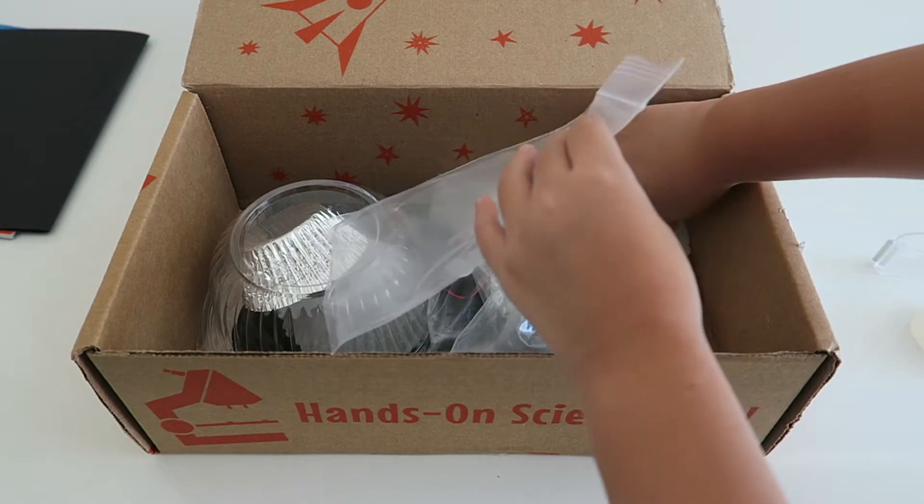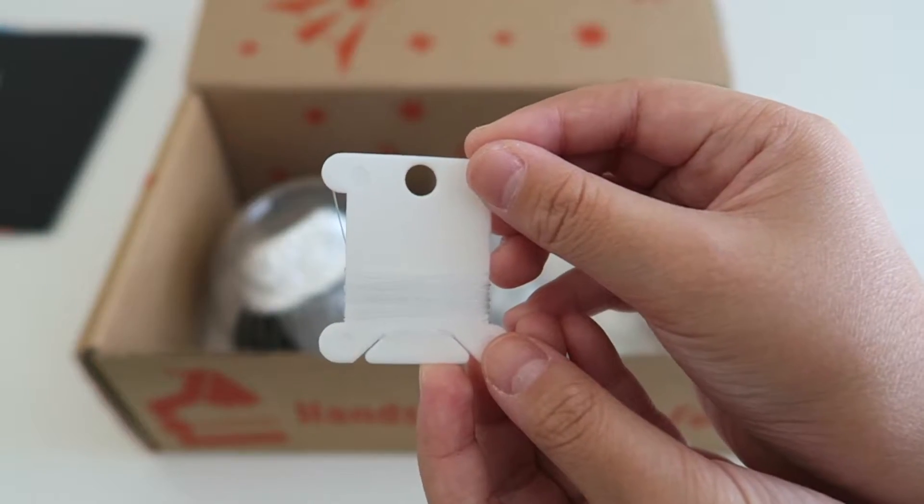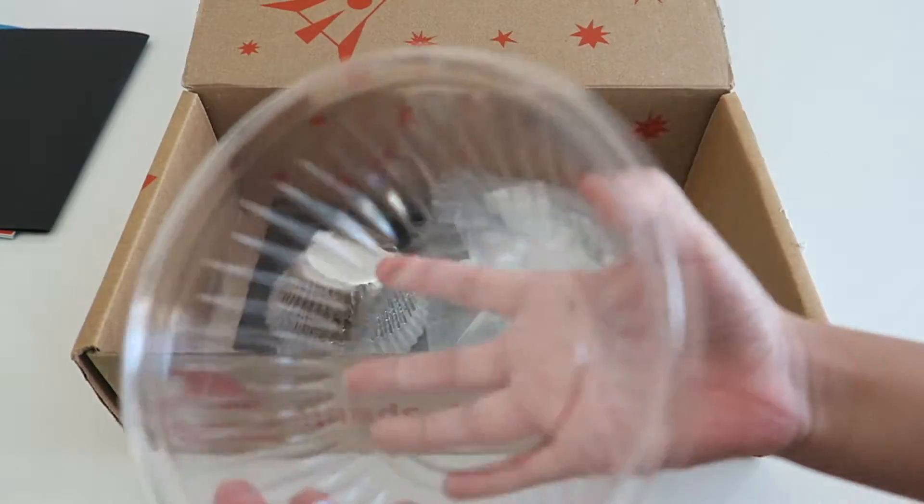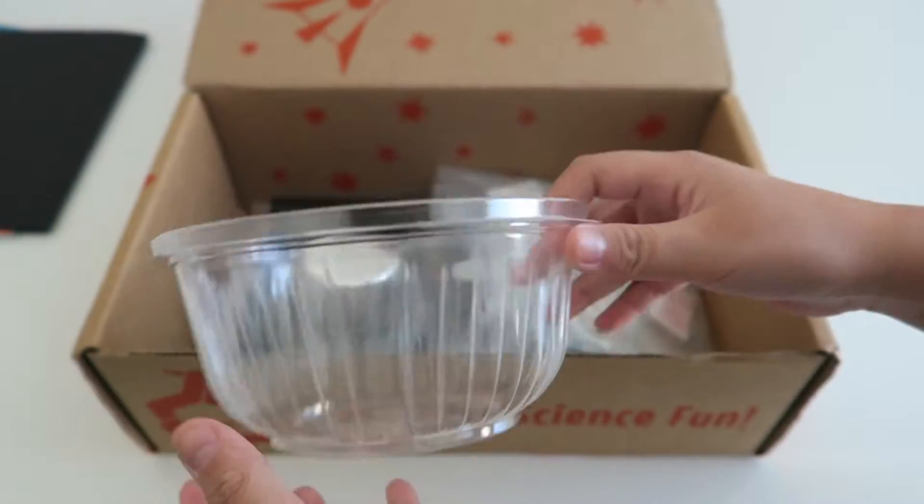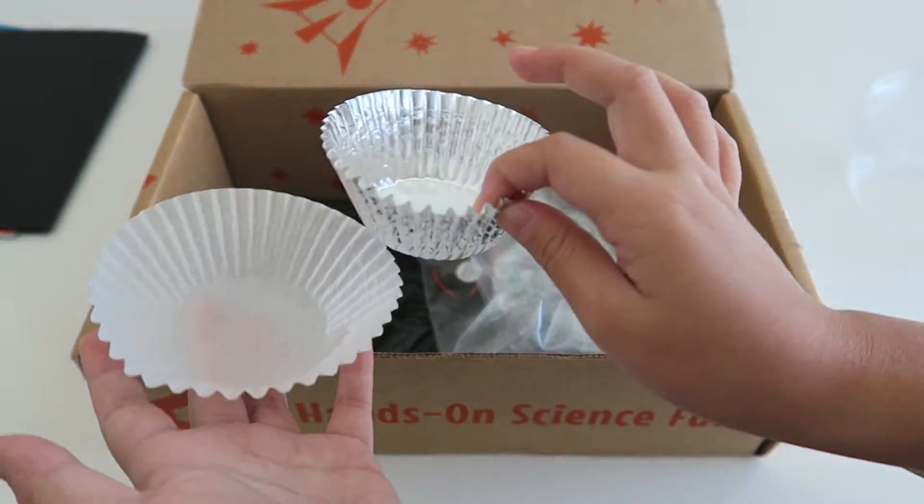The next thing we have is some tape and a fishing line. The next thing we have is this bowl and cupcake liners.